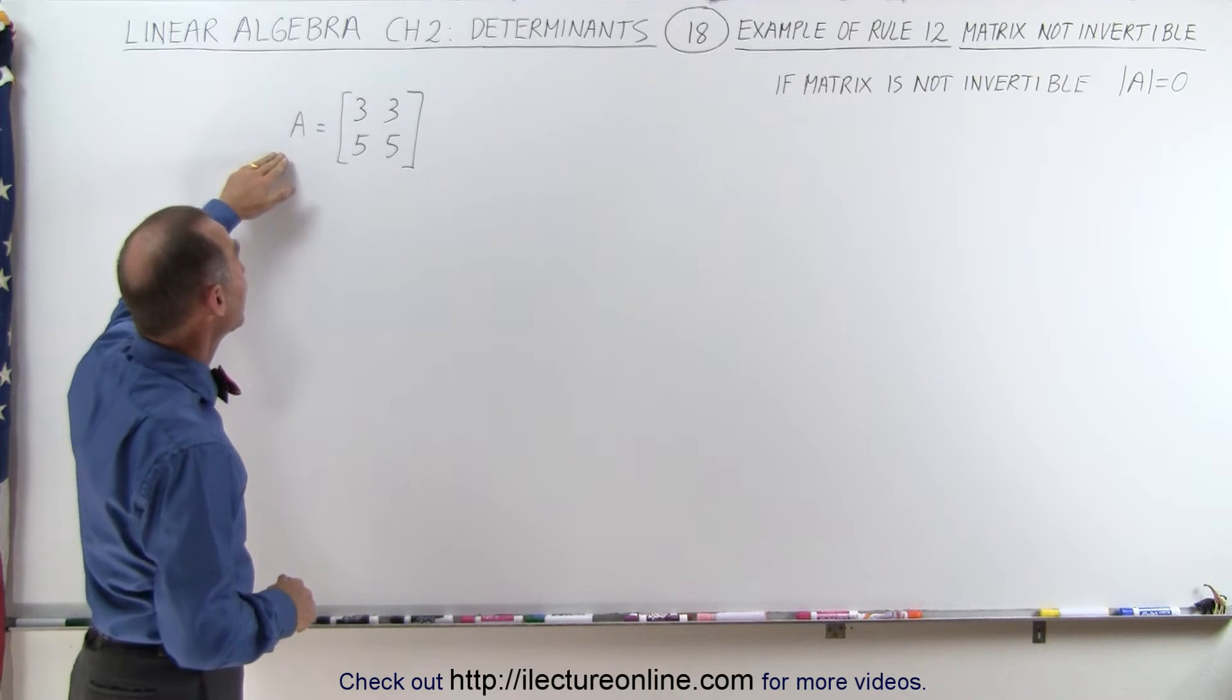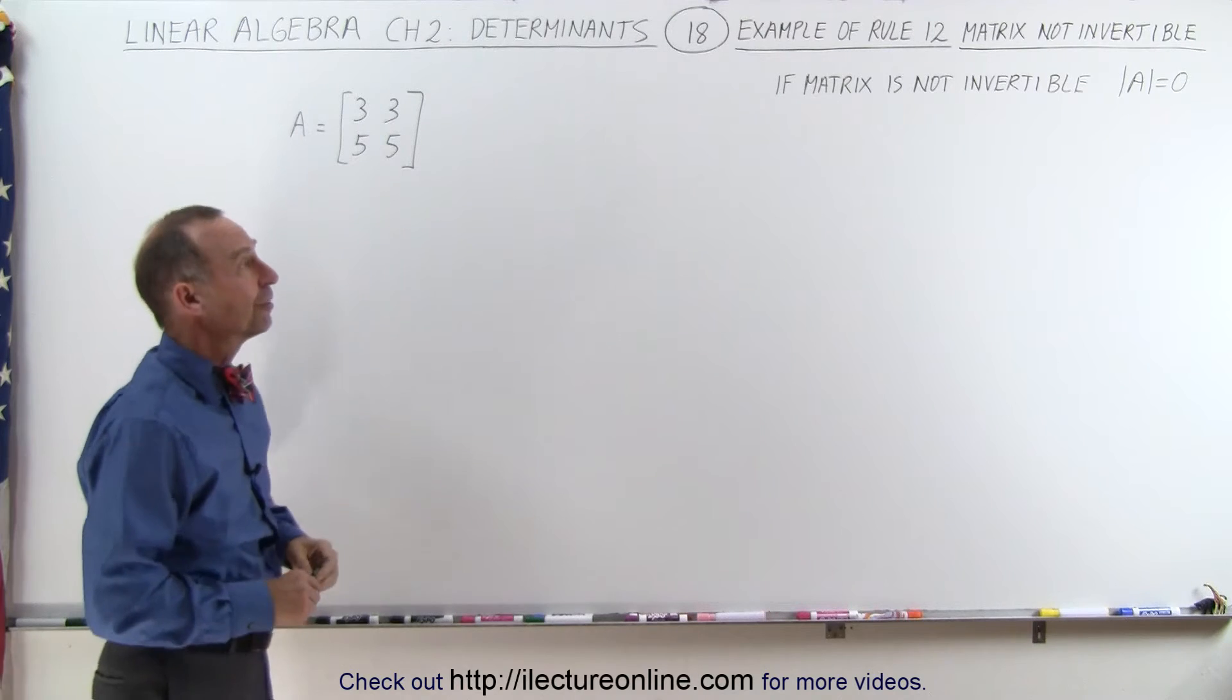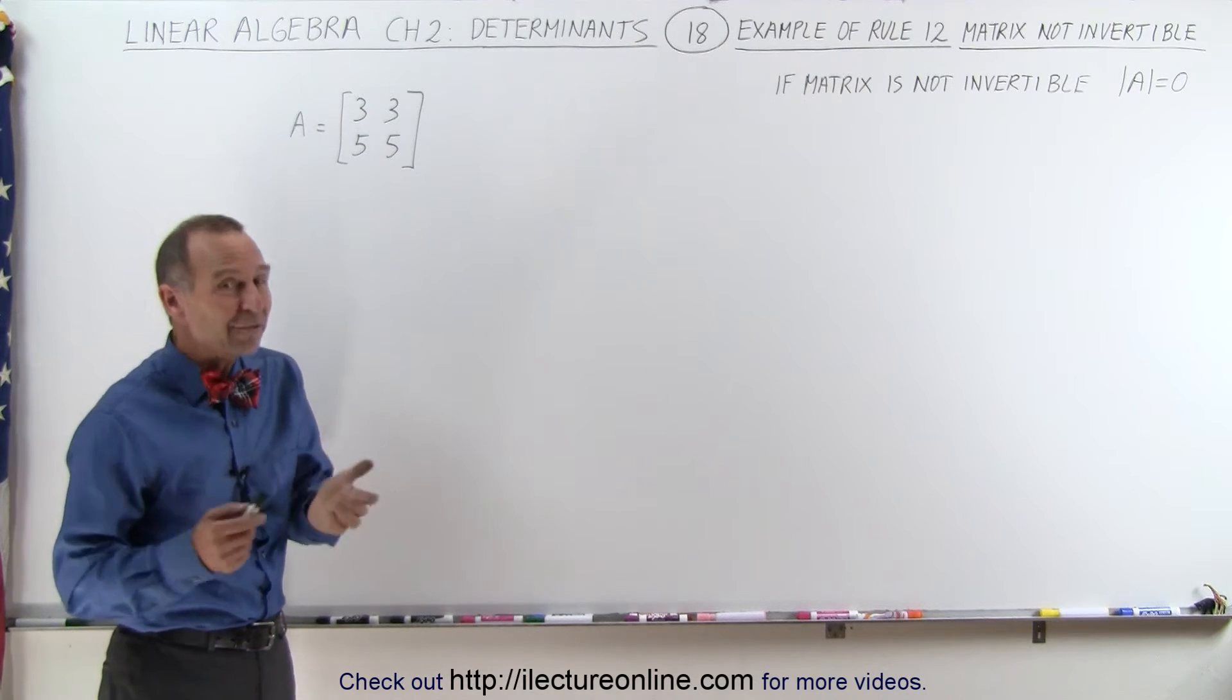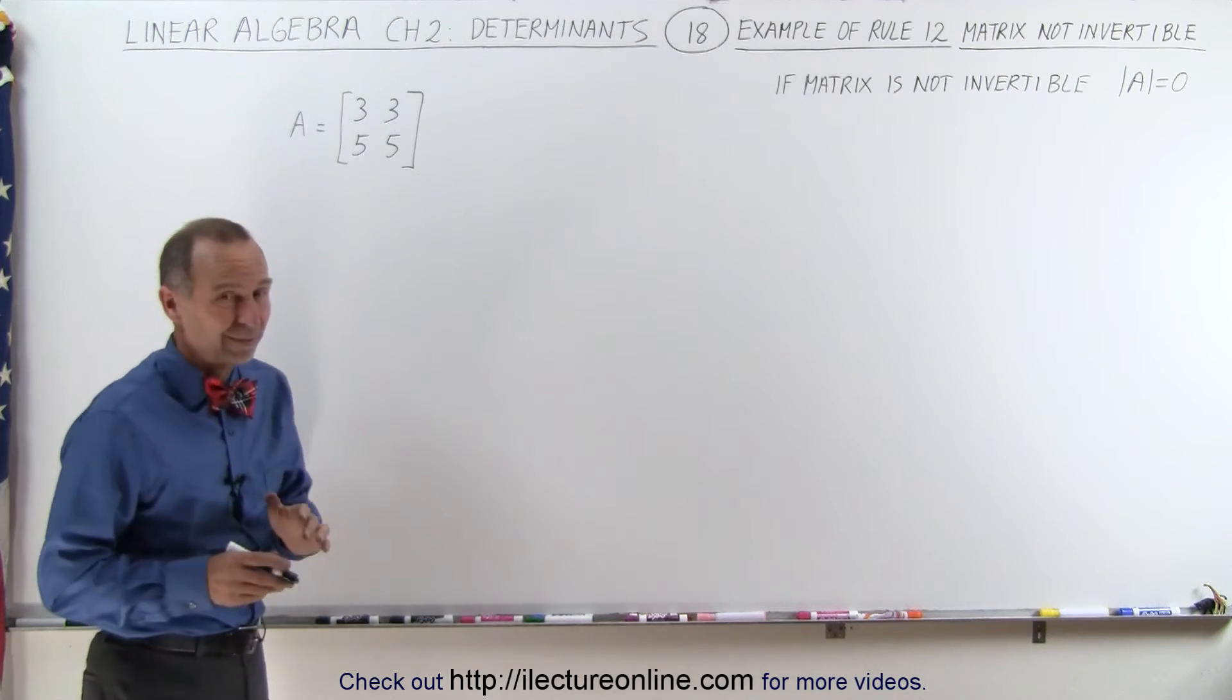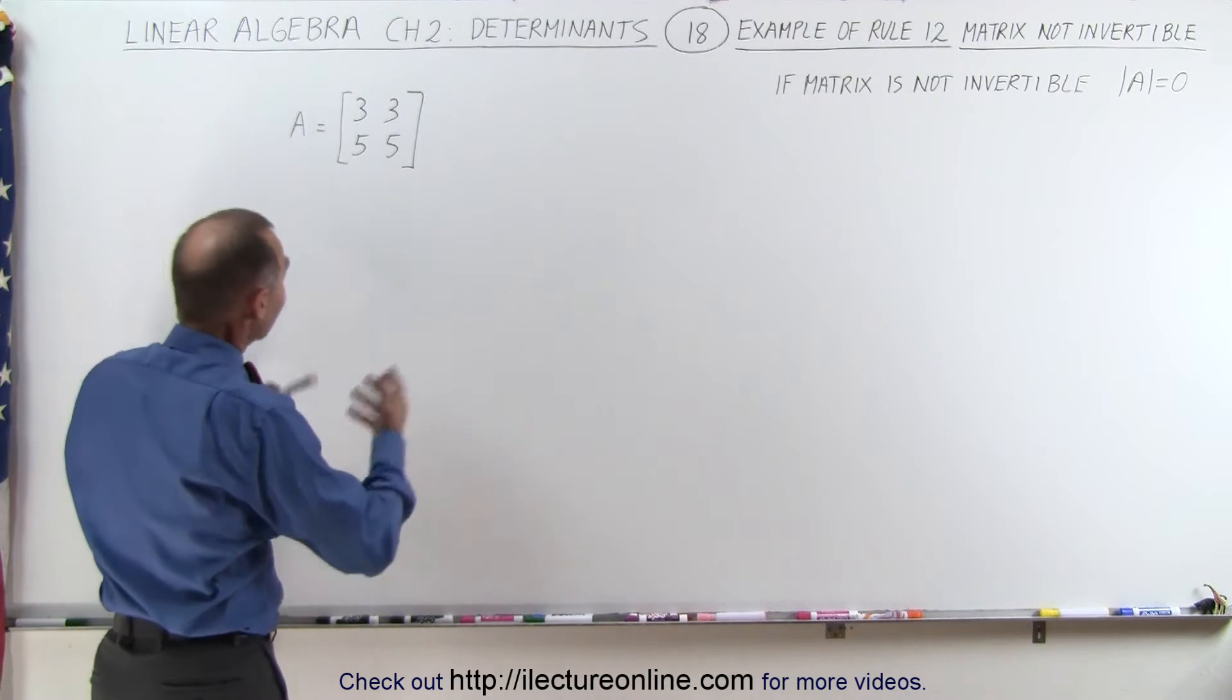So here we have the matrix A which has the row 3 3 and another row 5 5. Let's find the inverse of that matrix and see what we get. Of course I probably did it in such way that there's no such thing as an inverse of this matrix. Let's find out.